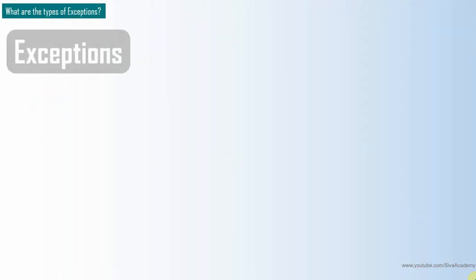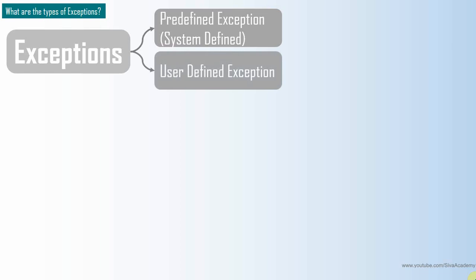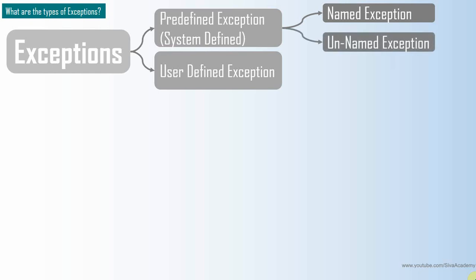Broadly, we can classify exceptions into two categories. One is called predefined exception — otherwise you can say system-defined, inbuilt, or Oracle-defined exception. The next category is user-defined exceptions. Oracle-defined or predefined exceptions are further classified into two categories: named exceptions and unnamed exceptions.